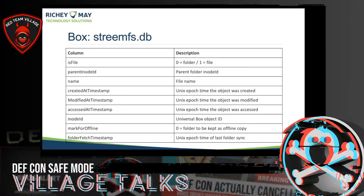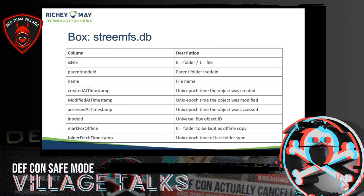Additional columns in streams_fs.db: whether it's a file or folder, parent inode ID, file name, multiple timestamps (created_at, modified, access) — though I'd caution you to test what events trigger those. We'll see the inode ID of the object, whether the item is marked for offline use or cached, and a folder_fetch timestamp in Unix epoch showing the last folder sync for that object.